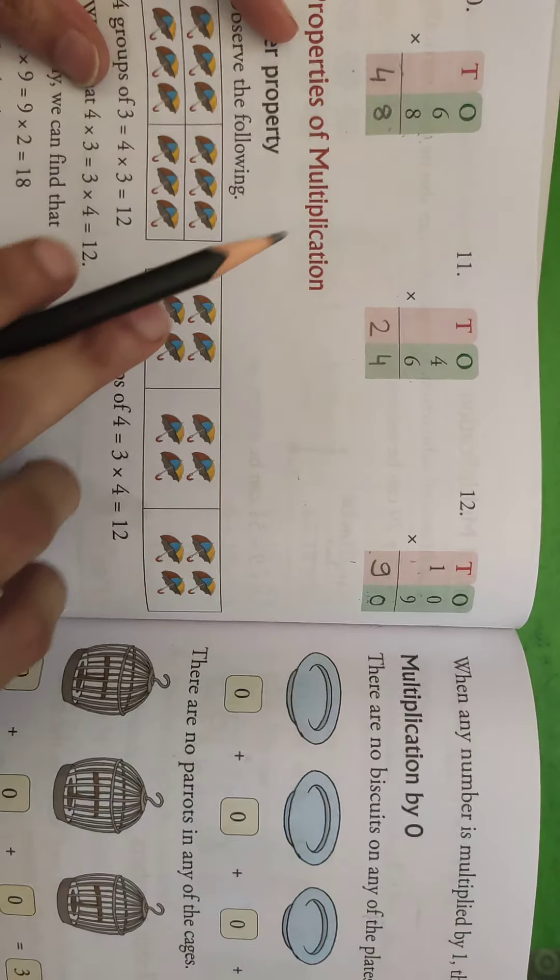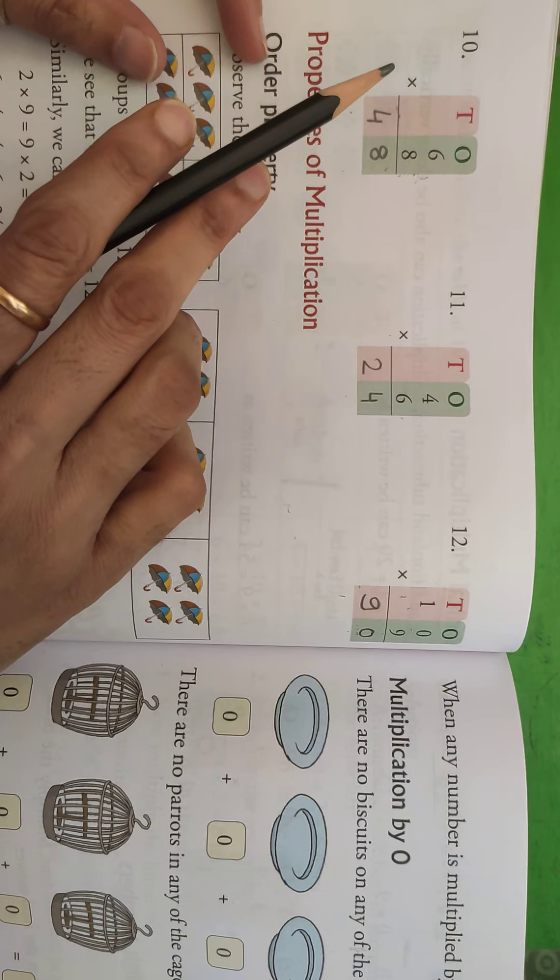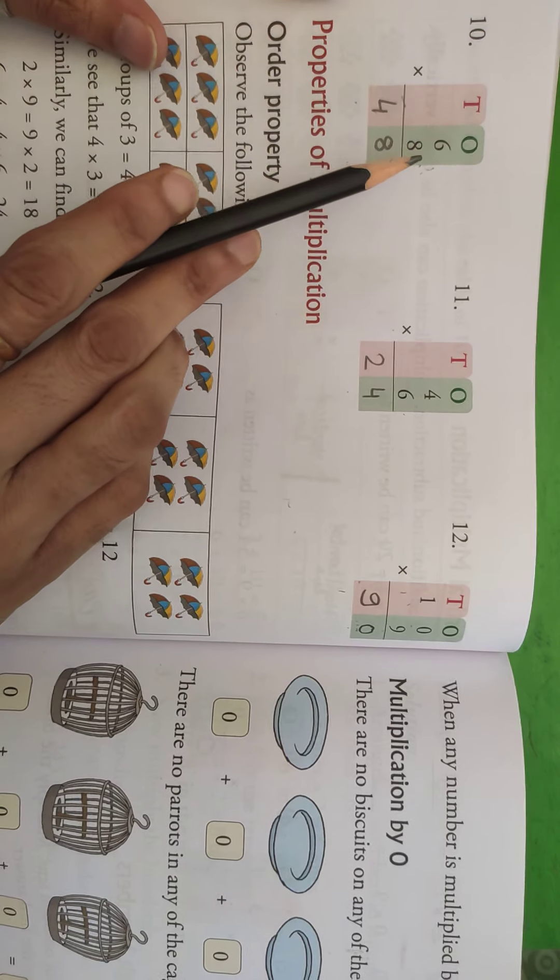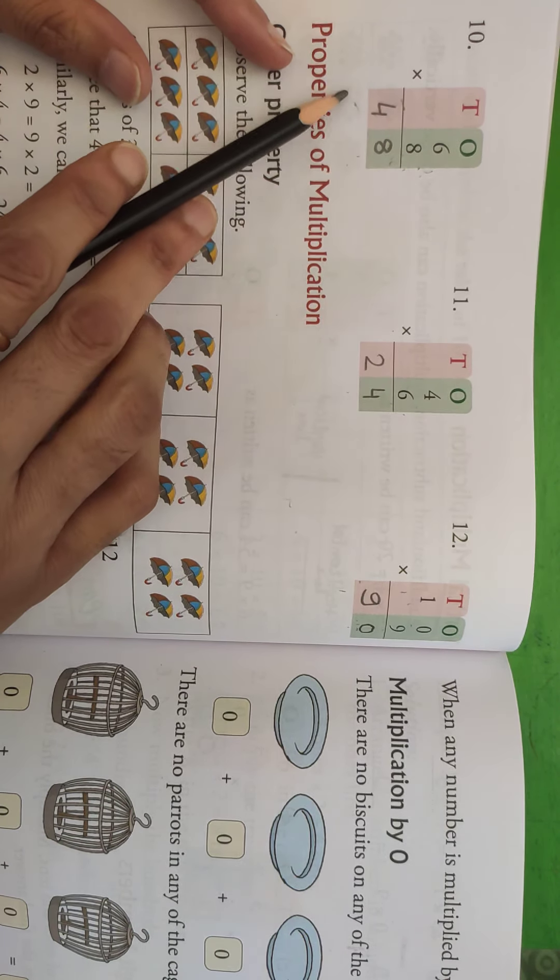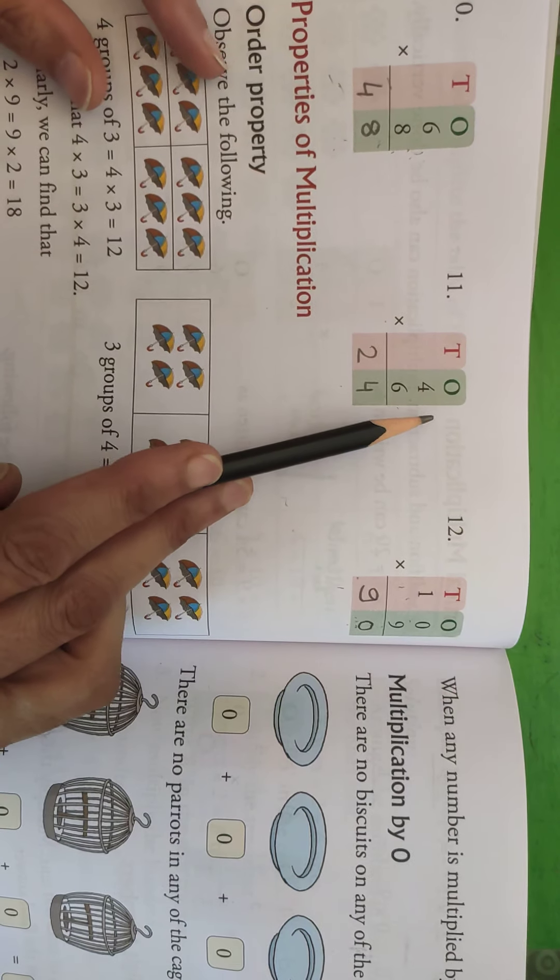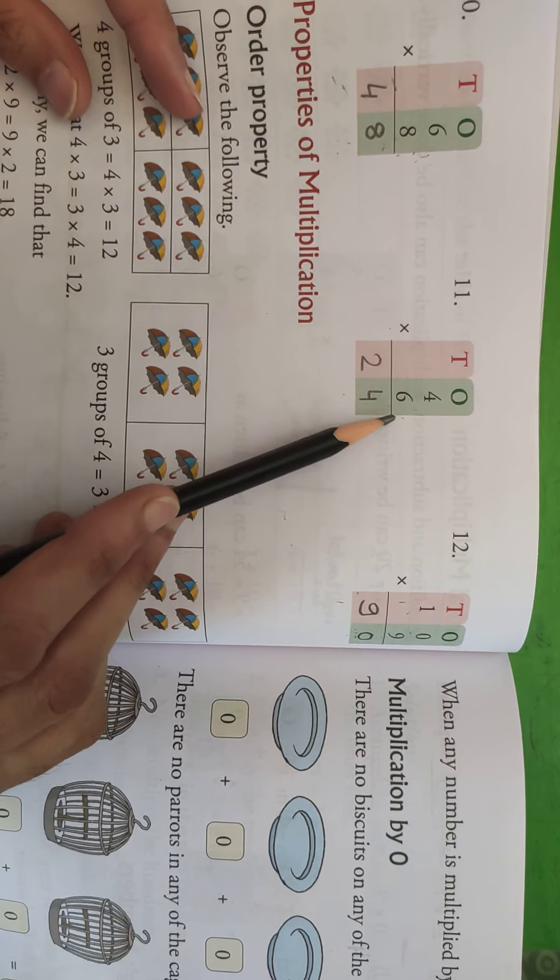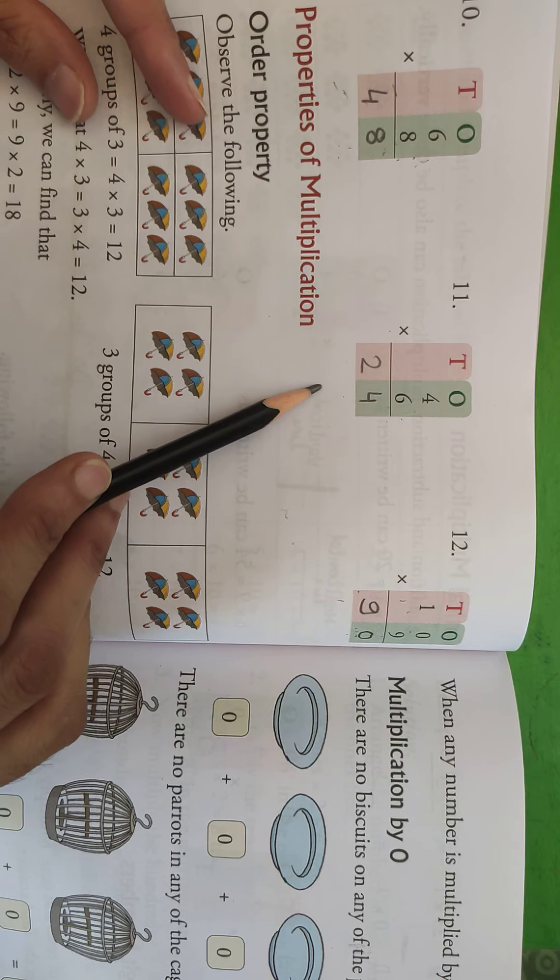Okay, so exercise 10, sorry, question number 10, we will do. Tens and ones, 6 multiplied by 8, so answer will be 48, 8 6s a 48. Then tens and 1, then 4 multiplied by 6, so 6 4s a 24.